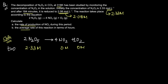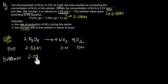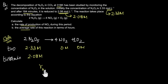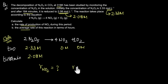Now after 184 minutes, the concentration of N2O5 drops down to 2.08 molar. This is all the information given to us, and we are asked to calculate the rate of production of NO2 during this time period. So how do we do that? Let's start by first asking ourselves what we mean by rate of production of NO2.